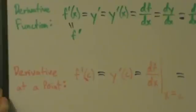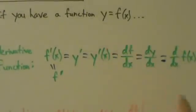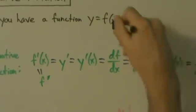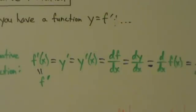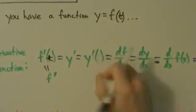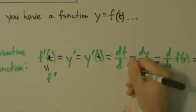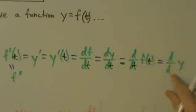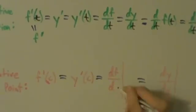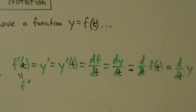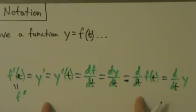There is one other point worth mentioning. Here we have a function y equals f of x, but if the variable is t instead of x, this all still applies with some differences. f of t: the x's become t's, so df dx becomes df dt, dy dx becomes dy dt, d dx of f of x becomes d dt of f of t, and d dx of y becomes d dt of y. And of course the point notation changes from x equals c to t equals c. We're just changing the variable from x to t.